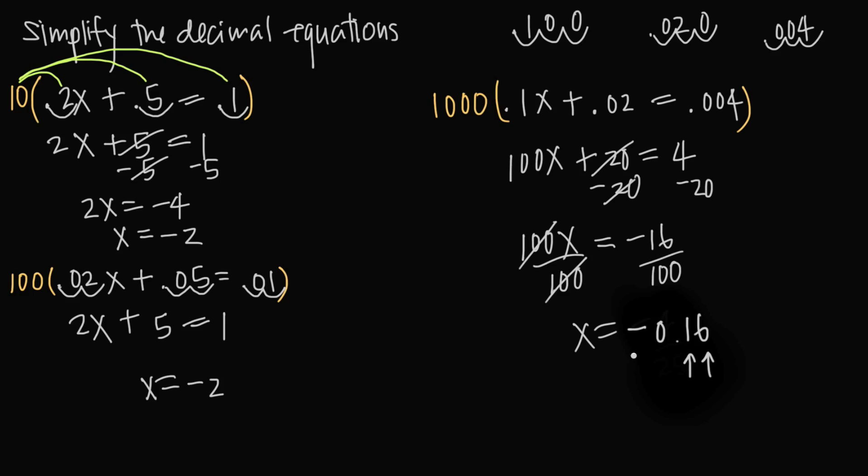And of course, we have our negative sign, so x is negative 0.16. And you might be tempted to leave this as negative 4 over 25 and just reduce the fraction, but because our original problem was given to us in decimal form, we want to make sure that our final answer is also in decimal form. If the original problem is given in fractions, you want to leave your final answer in fractions, but because it's given in decimals, you want to leave the final answer in decimals.